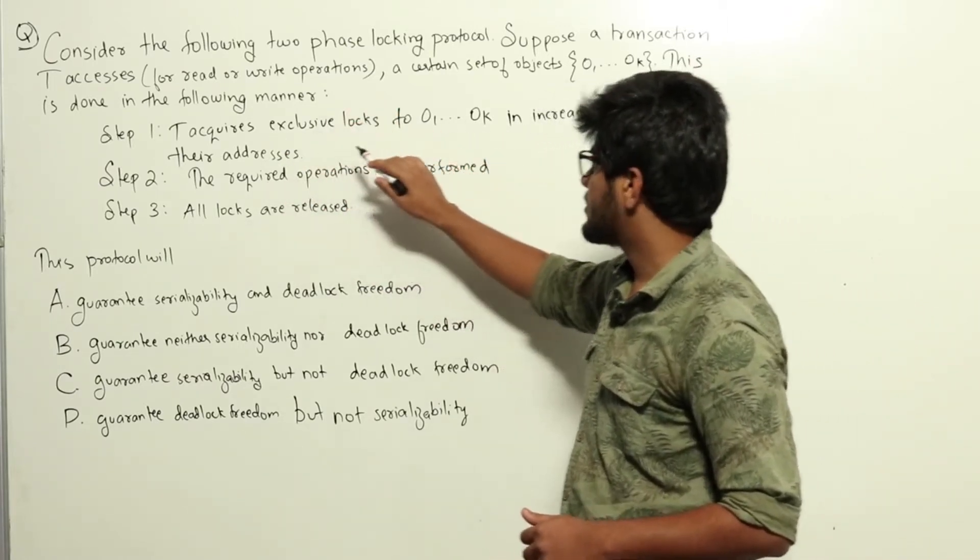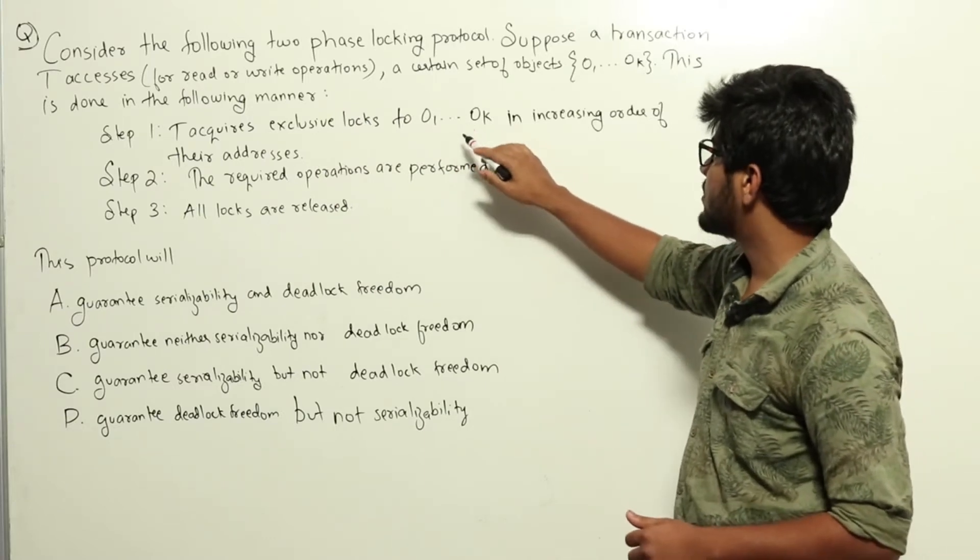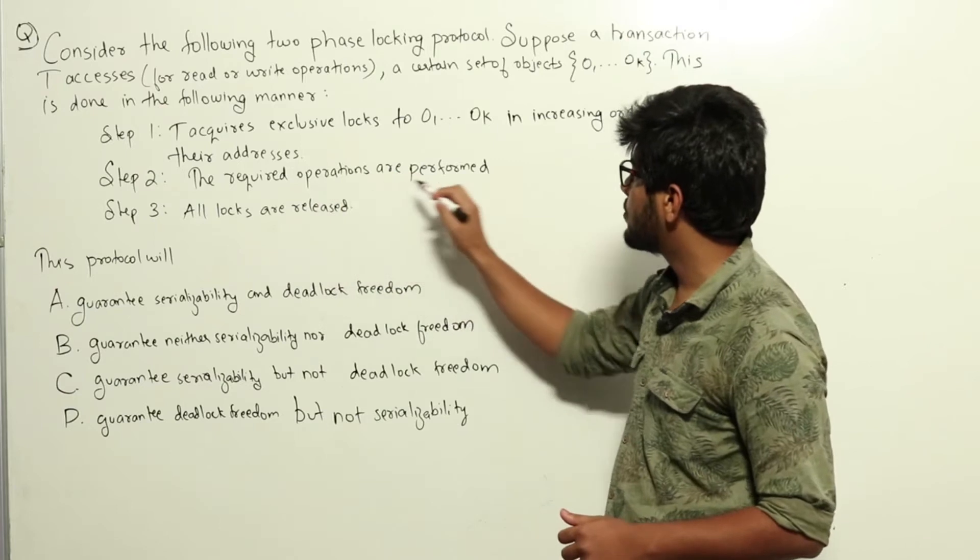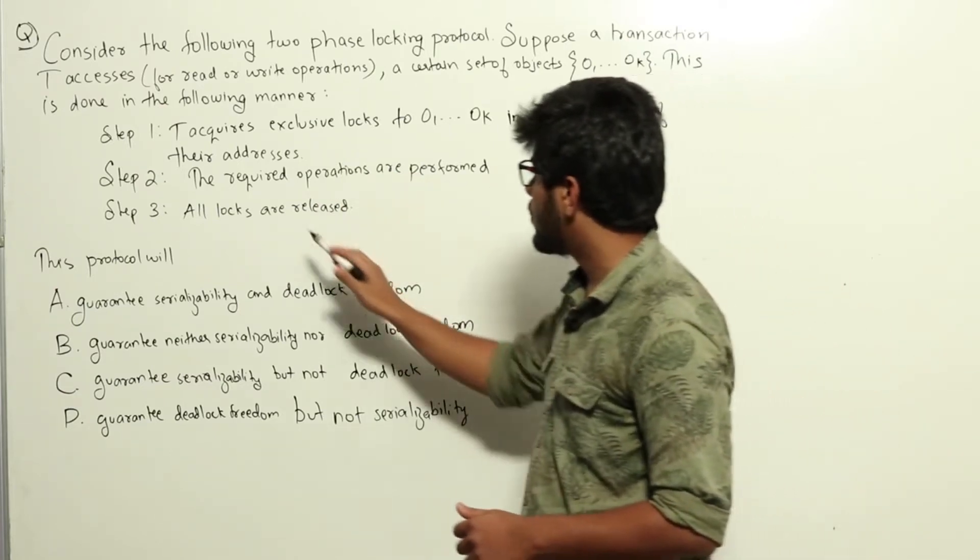Step 1: T acquires exclusive locks to O1, O2, etc., up to OK in increasing order of their addresses. Step 2: The required operations are performed. Step 3: All locks are released.